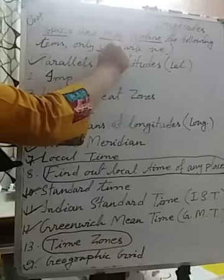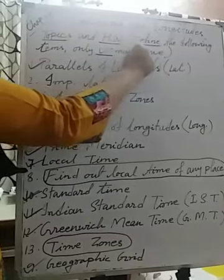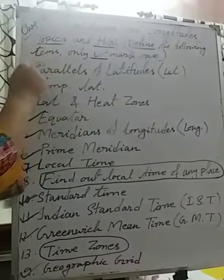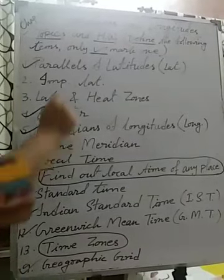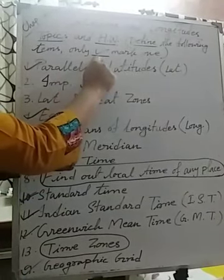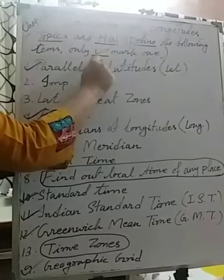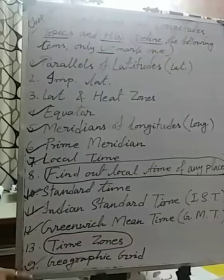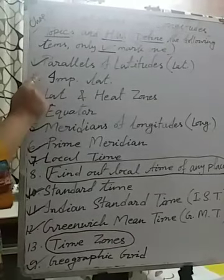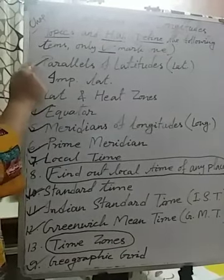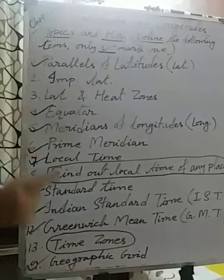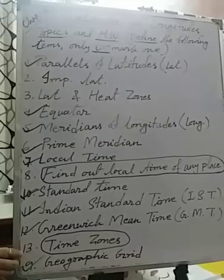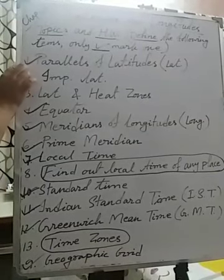And homework — what homework do you have to do from here? Define the following terms. I have mentioned tick marks. Only tick-marked items are your homework, because if I give everything it would not be possible for you to write. So I have given only tick marks — 1, 2, up to 13 I have mentioned. One by one I am telling you, write down and put the tick mark also.